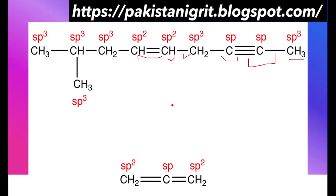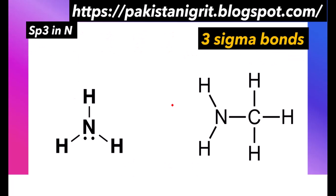In a nutshell, if a carbon is forming four sigma bonds its hybridization will be sp3. If it is forming three sigma bonds then its hybridization will be sp2. If it is forming two sigma bonds then its hybridization will be sp.